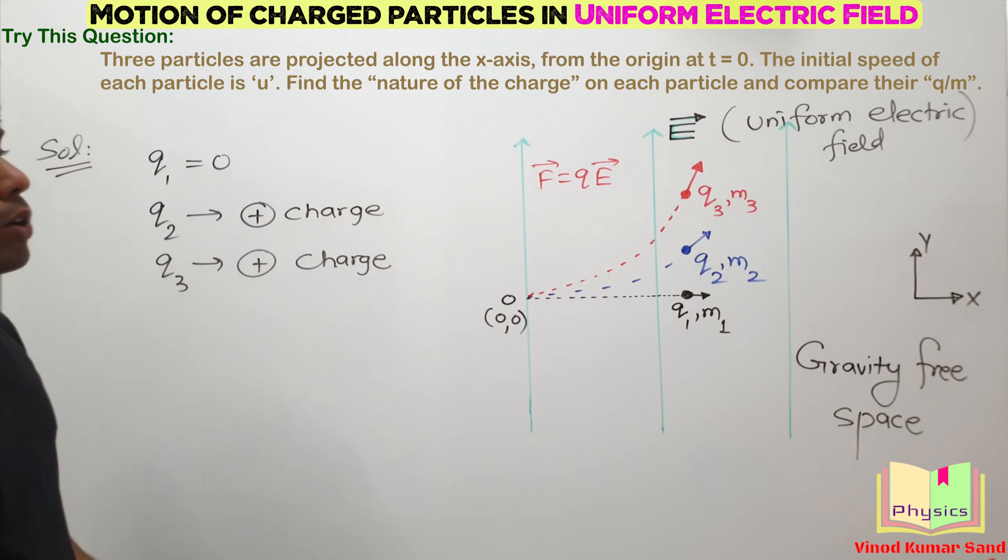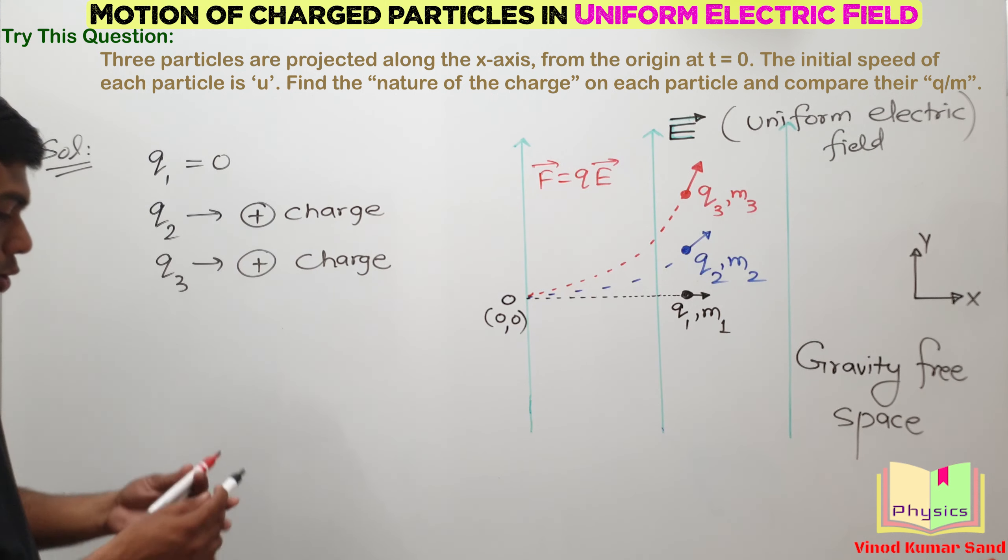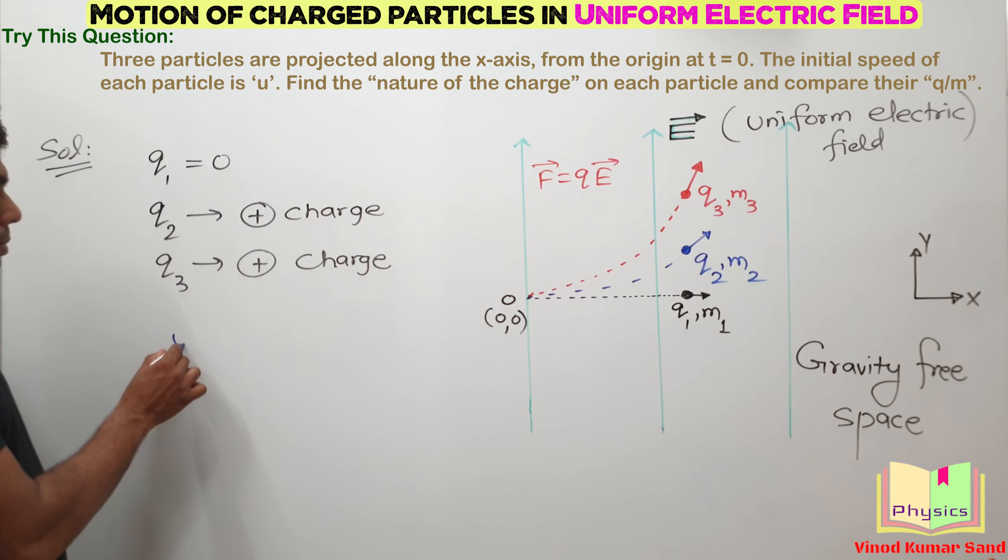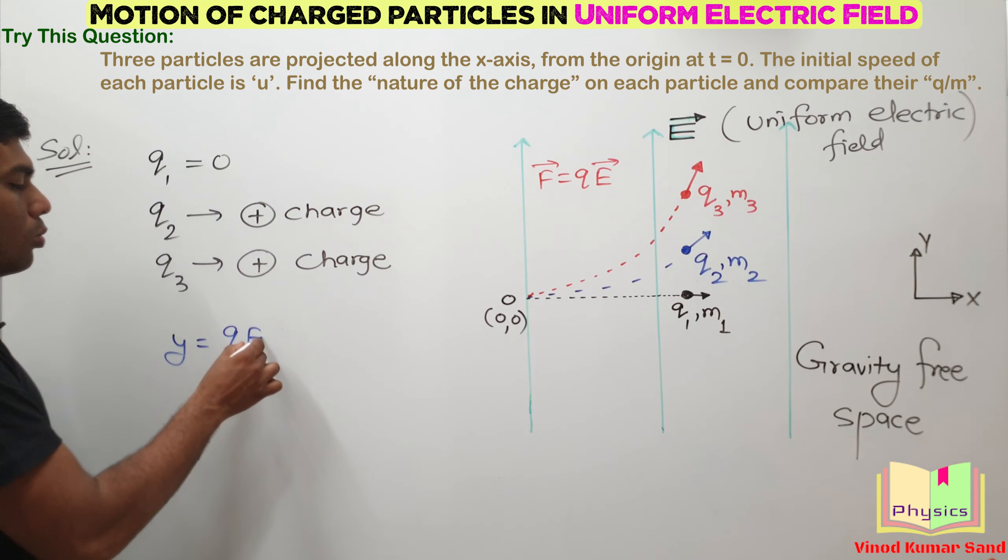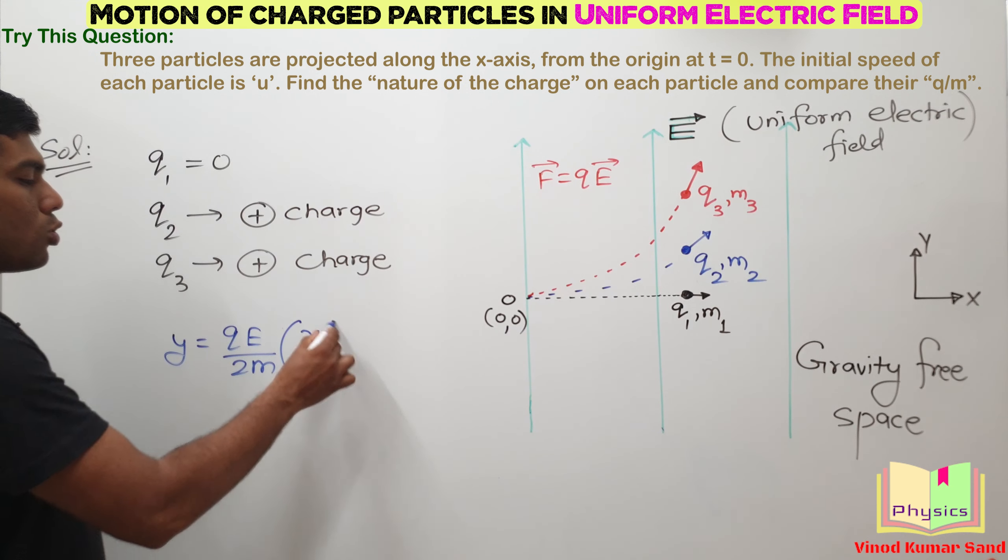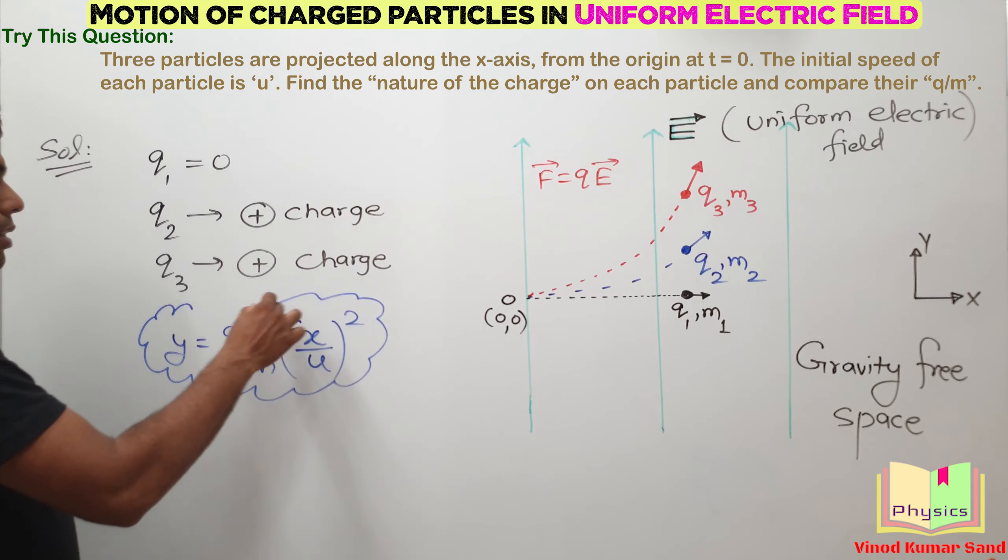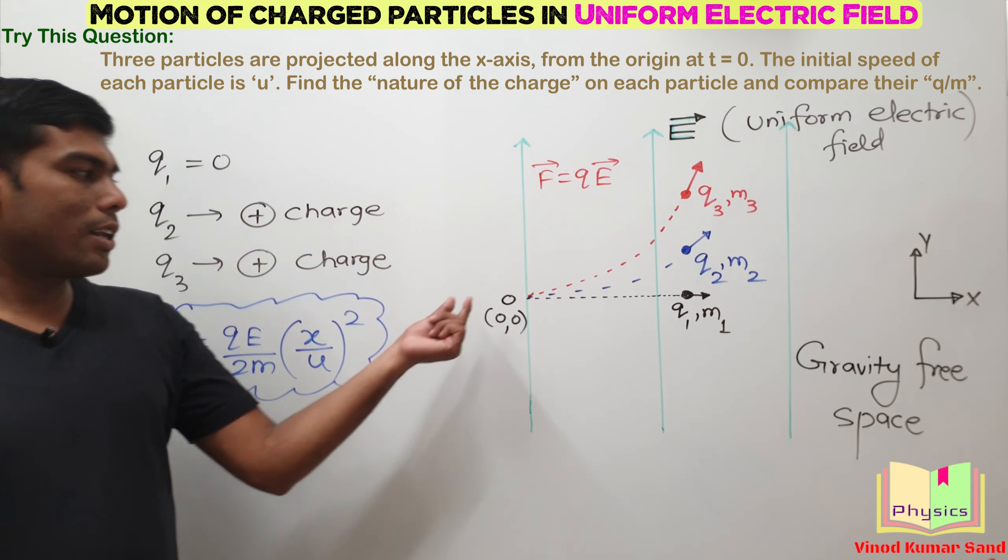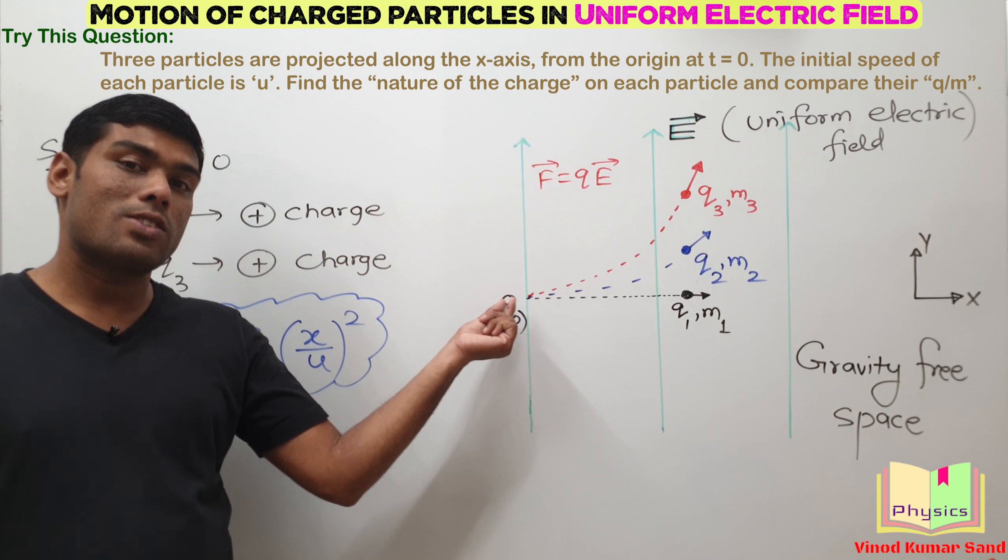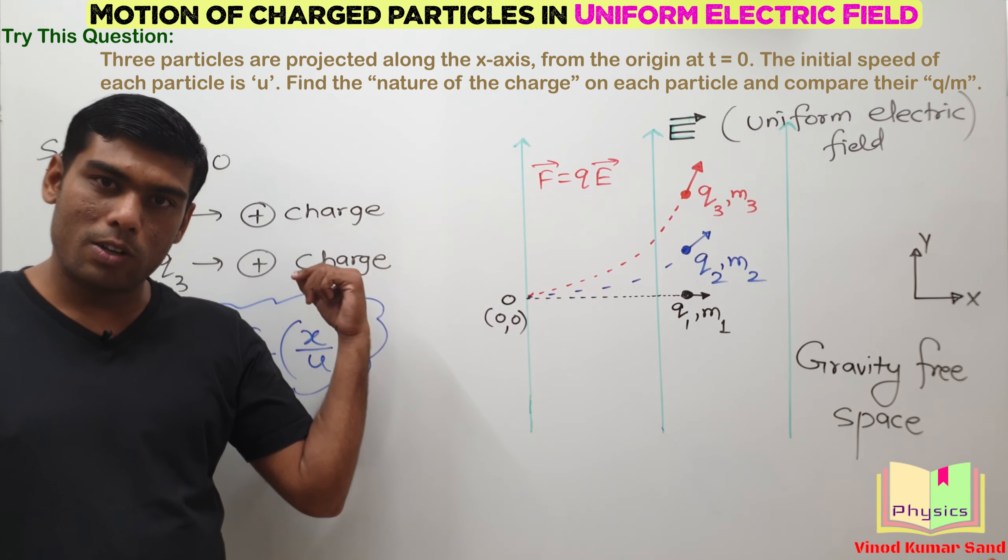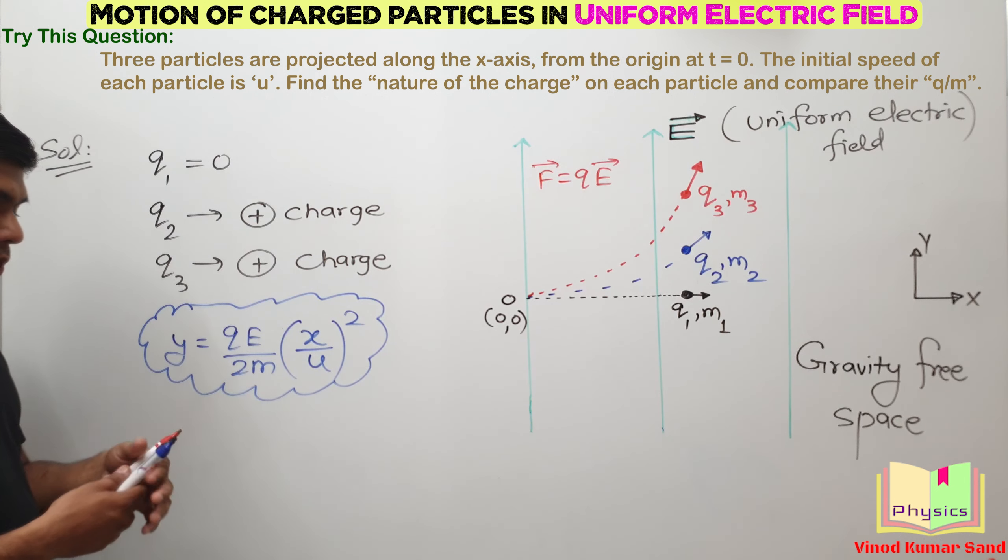Now we have to compare their Q by M ratio. For that comparison, we remember one expression from the previous computation. Y was equal to QE by 2M X by U square at a given moment of time. You remember that all these particles were projected with the same initial velocity from the origin at t equals 0. So we can use this equation.